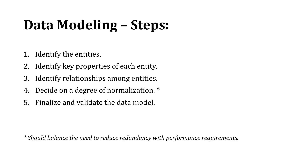As we model this out and proceed through these steps, we identify what are called entities — the things we're going to be tracking data about. Maybe it's our products, parts, or customers; those could be entities. Then in the next step, we identify key properties of those entities. For products, for example, maybe we have a product description, a supplier ID who provided that product, and so on.